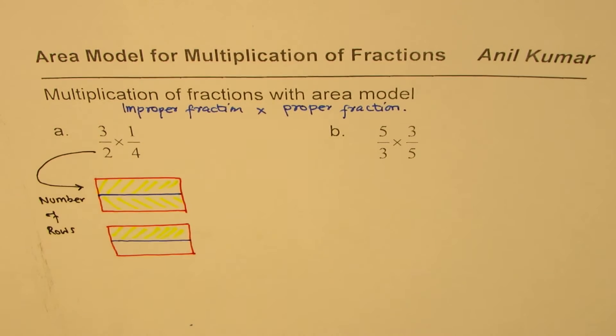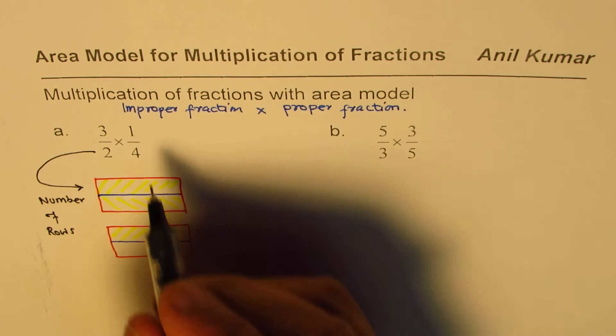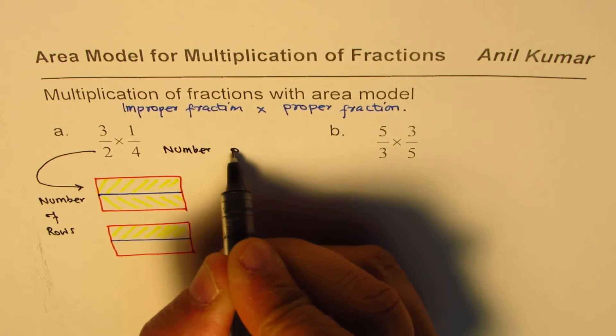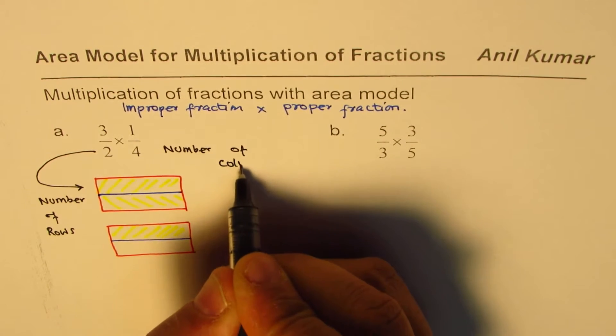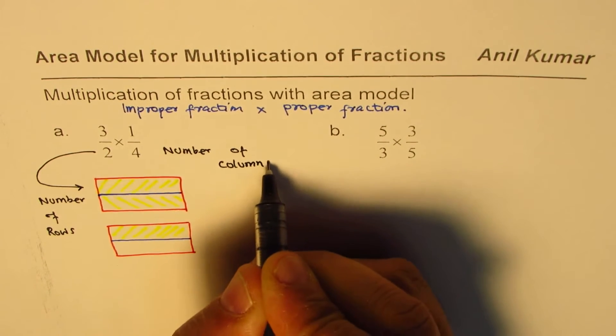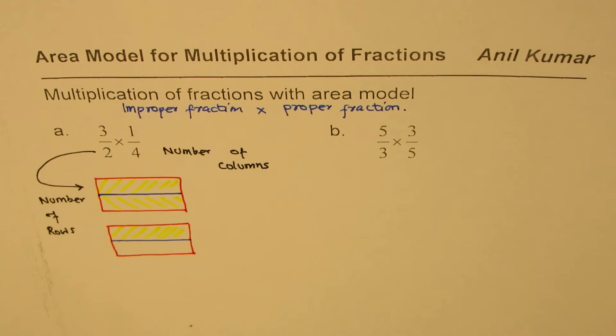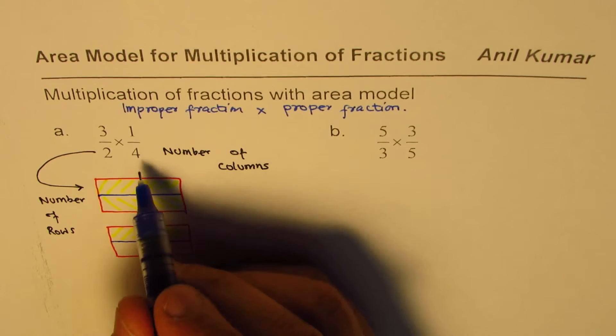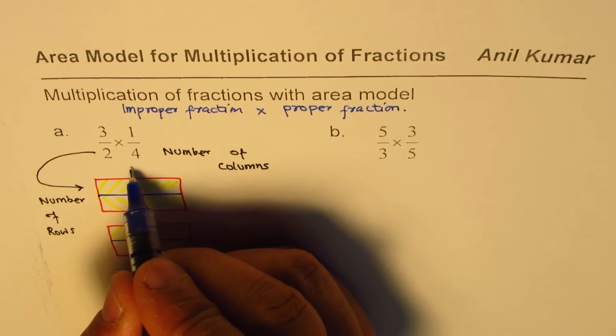Now, 4, which is the denominator of the other fraction, will give us number of columns. So 1 fourth really means that each rectangle will now be divided into four equal parts.